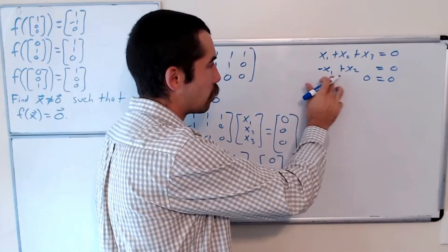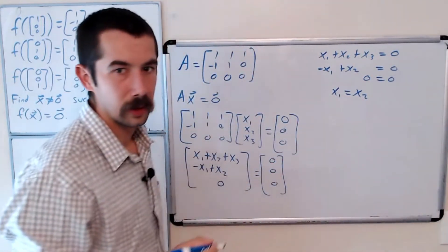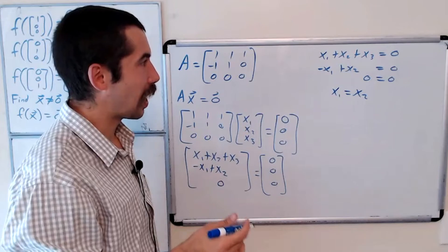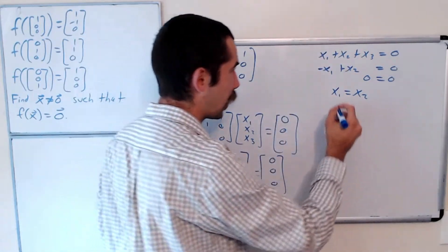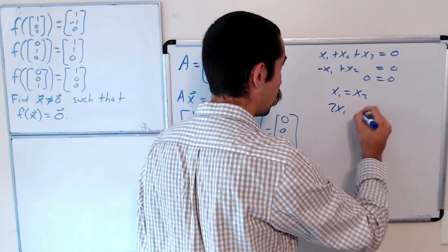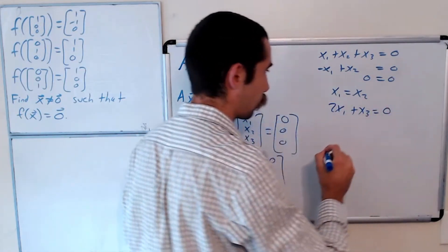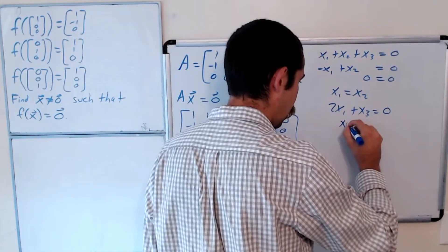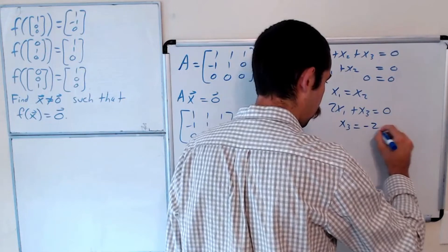Okay, so this second row gives us that x1 is equal to x2. And subbing that into this top equation, we get that 2x1 + x3 = 0. So x3 = -2x1.